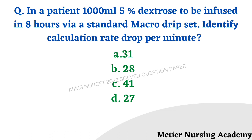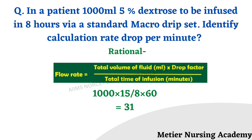The first question: in a patient, 1000 ml of 5% dextrose is to be infused in 8 hours via a standard macro drip set. Identify the calculation rate in drops per minute. Options: 31, 28, 41, and 27. The right answer is option A, 31. For solving this, the formula is total volume into drop factor divided by total time into 60. Substituting values: 1000 into 15 divided by 8 into 60 gives 31.